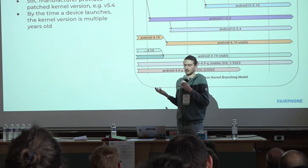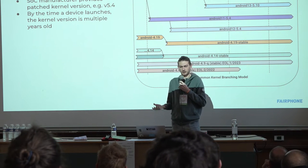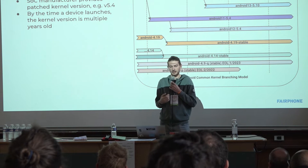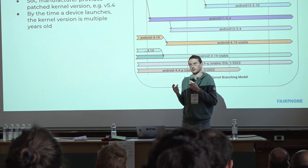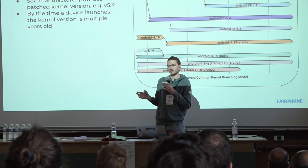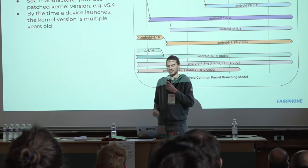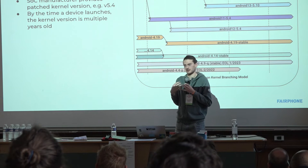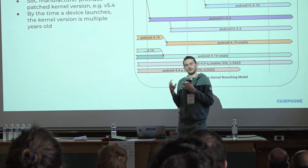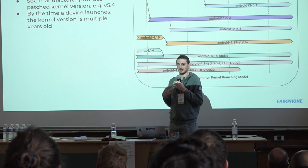Let's talk about how the Linux kernel lands on Android devices. Linux itself is developed on kernel.org and released there every couple of months. Every year, one of these versions gets selected as an LTS — a long-term support release — supported between six and two years. They are slowly moving to a two-year support model. Based on this LTS branch, Google creates an Android common kernel branch, the ACK branch — for example, an Android 11 5.4 branch, meaning the 5.4 kernel version for devices launching with Android 11.